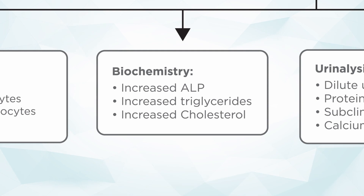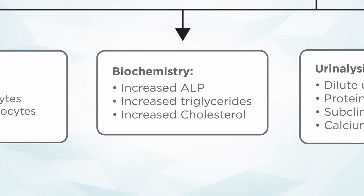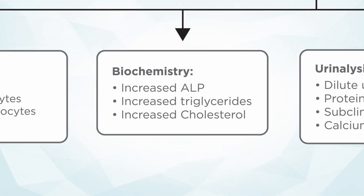On our biochemistry profile, we often see an increased alkaline phosphatase. Many practitioners feel that if the animal has a normal alkaline phosphatase, it cannot have Cushing's disease, but that's not true — only about 80% of dogs have an elevated alkaline phosphatase. Other things you might see are increased triglycerides or an increased cholesterol.